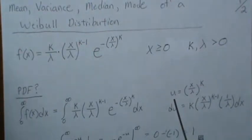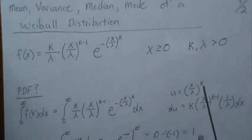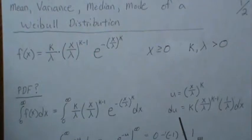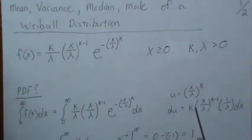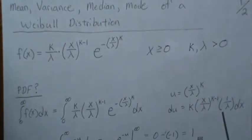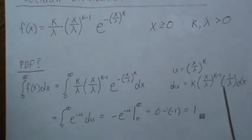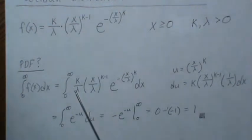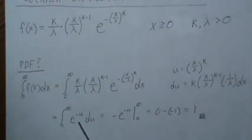We make a u substitution, x over lambda raised to the k, so then we differentiate that and we get the k comes out front, reduce it 1, chain rule gives us 1 over lambda. So all this is part of dx, so we just get e to the minus u du.